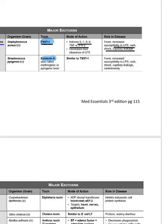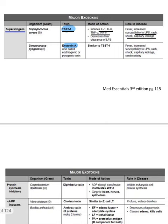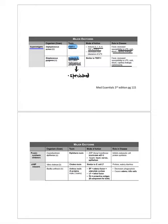Streptococcus pyogenes, which causes pharyngitis, releases exotoxin also known as erythrogenic toxin. This is also encoded via specialized transduction by phage (ABCDS). This is essentially a super antigen.